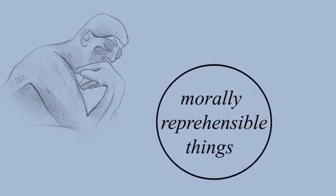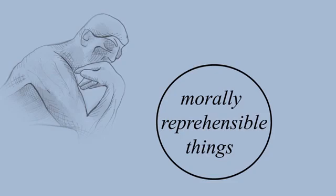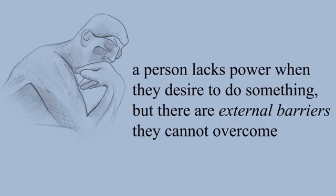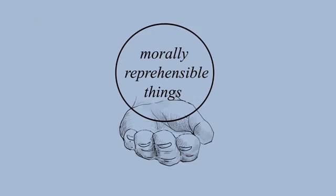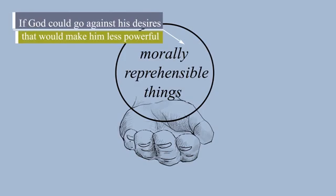A skeptic may object that it makes sense that to be truly all-powerful, God should be able to do morally reprehensible things. But this is not true. We would say a person lacks power when they desire to bring about something, but there are external barriers preventing them they cannot overcome. There are no external barriers which prevent God from creating a world which is morally reprehensible. The constraint on God is due to his own moral goodness. Doing morally reprehensible things would be against God's desires, and if God could perform these actions, that would make God less powerful, not more.